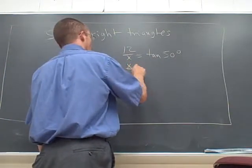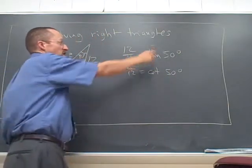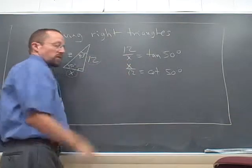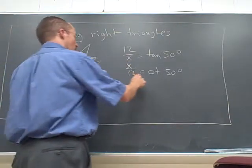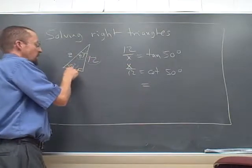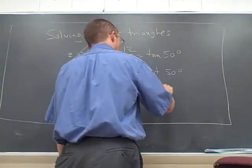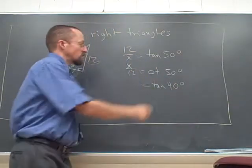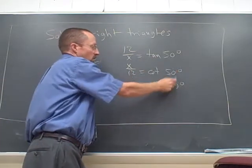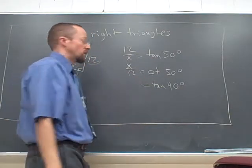Or we could write x over 12, that's cotangent of 50, which makes sense because these are reciprocals. We could even write x over 12 focusing on this angle - that's tan of 40. Oh, that's interesting. Cotangent of an angle is the tangent of the complementary angle. That's a cofunction fact, a cofunction identity.